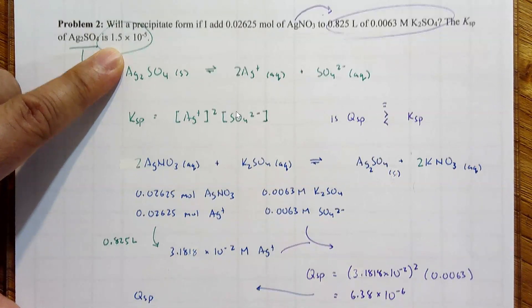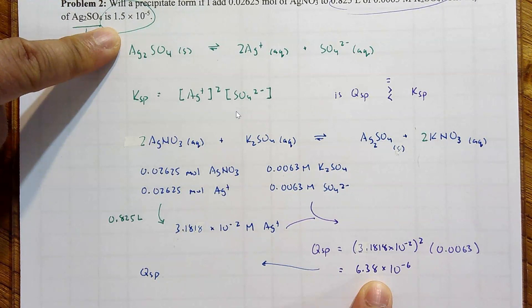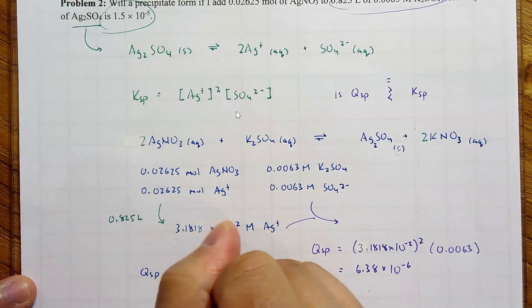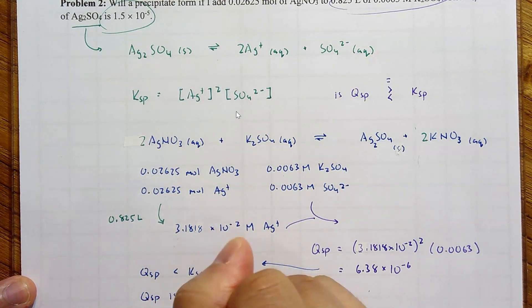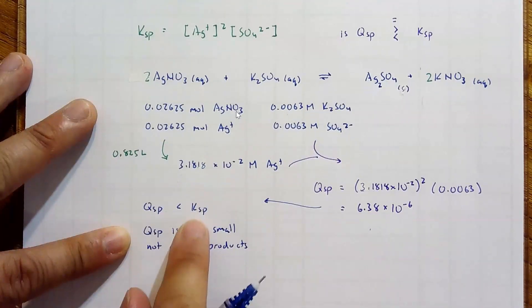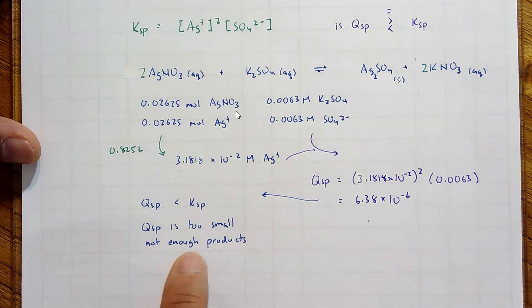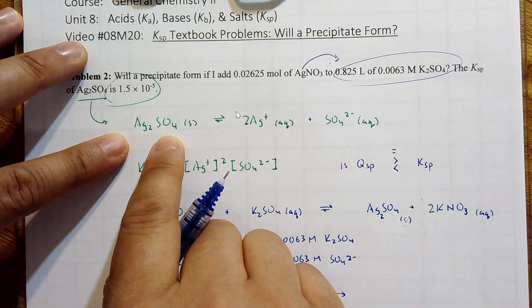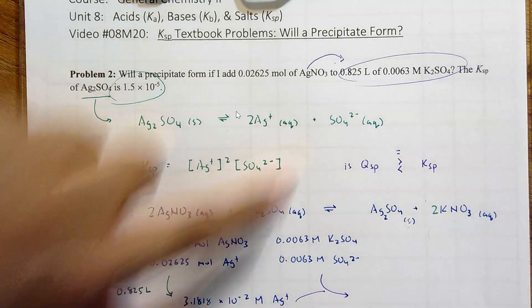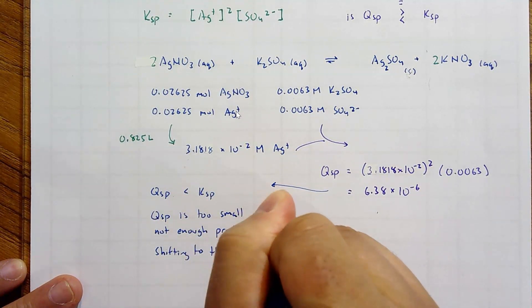And we realize that Qsp is less than, right there. Qsp is less than Ksp, meaning that Qsp is too small, too much reactants, or not enough products for Qsp to be Ksp. Remember, the equilibrium will shift until Q is equal to K. So what does that mean? We don't have enough products. We are not going in the reverse direction. We need more products. You are shifting to the right. You are shifting to the right. You're shifting to the right.